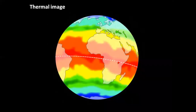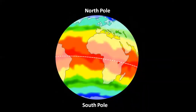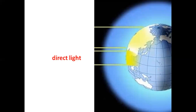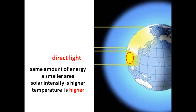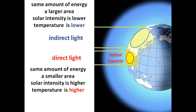Consider the thermal image. The blue color at the north and south pole indicates lower temperatures. The red color at the equator indicates higher temperatures. Why is it hotter at the equator than at the poles? The light shining at the equator is direct light — the same amount of energy is concentrated on a small area, so the solar intensity is higher and the temperature is higher. The light shining close to the poles is indirect light — the same amount of energy is spread over a larger area, so the solar intensity is lower and the temperature is lower. That's why it's cooler at the poles.